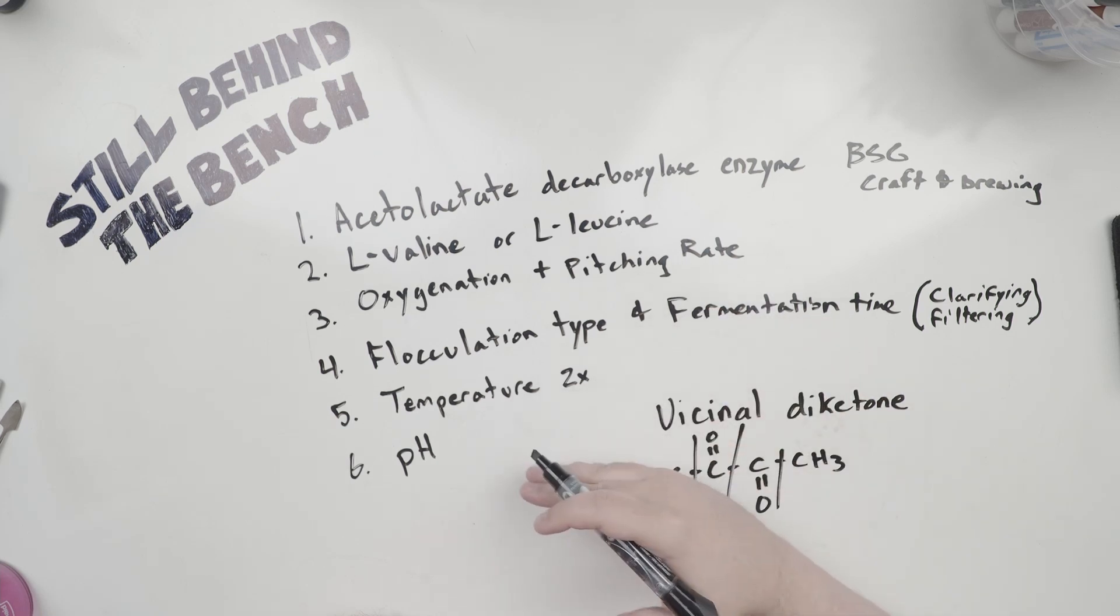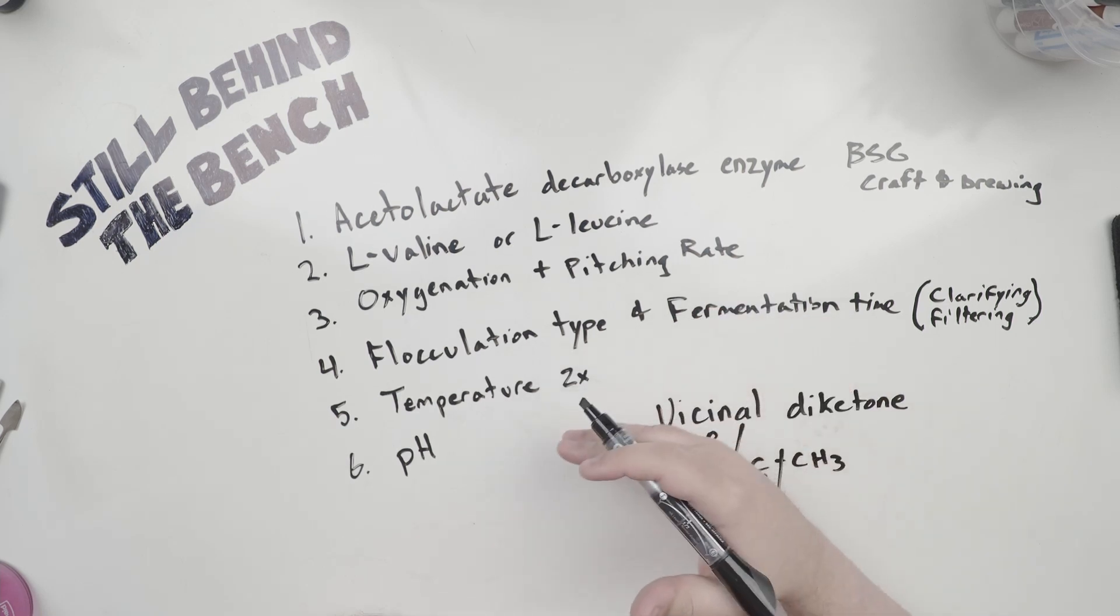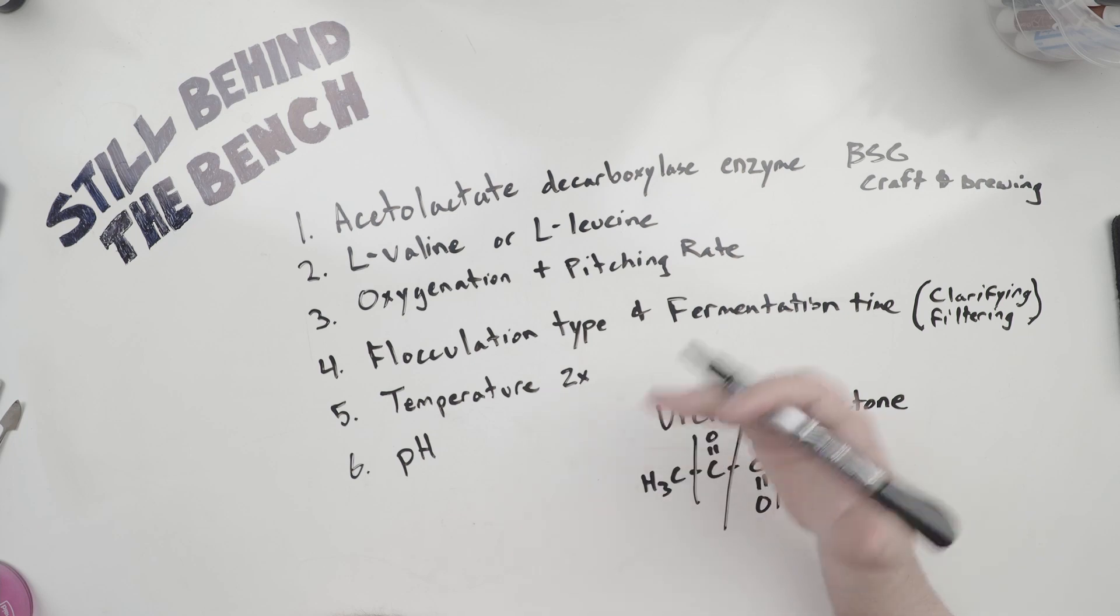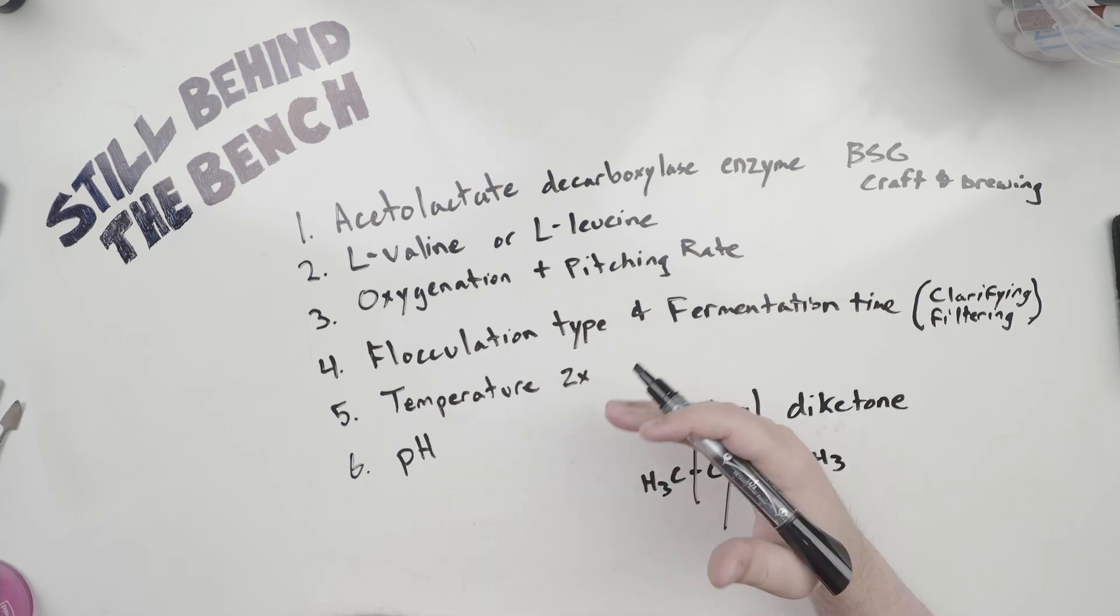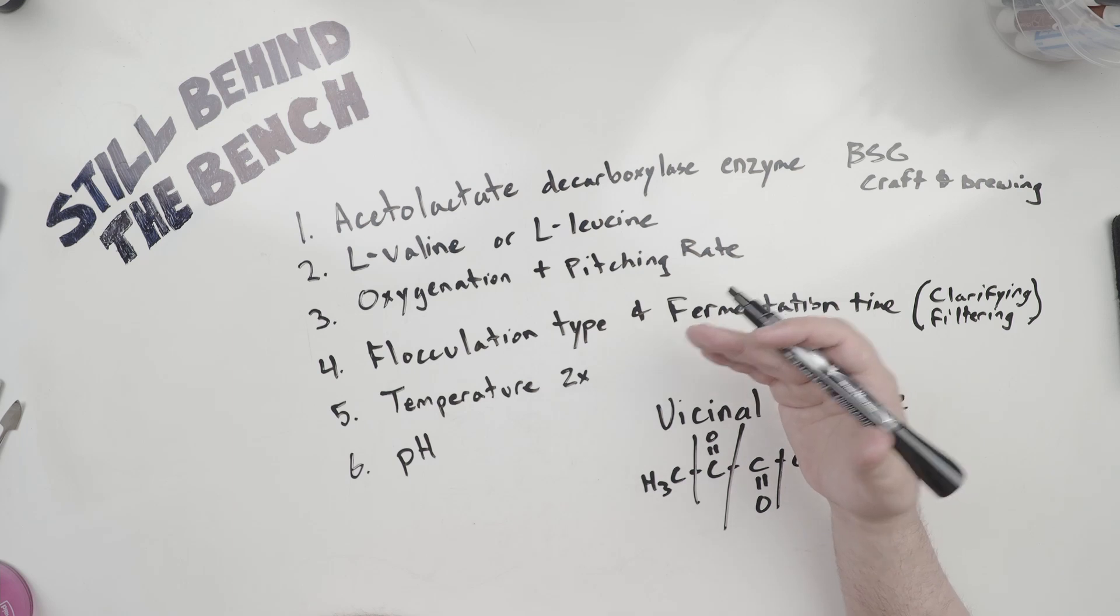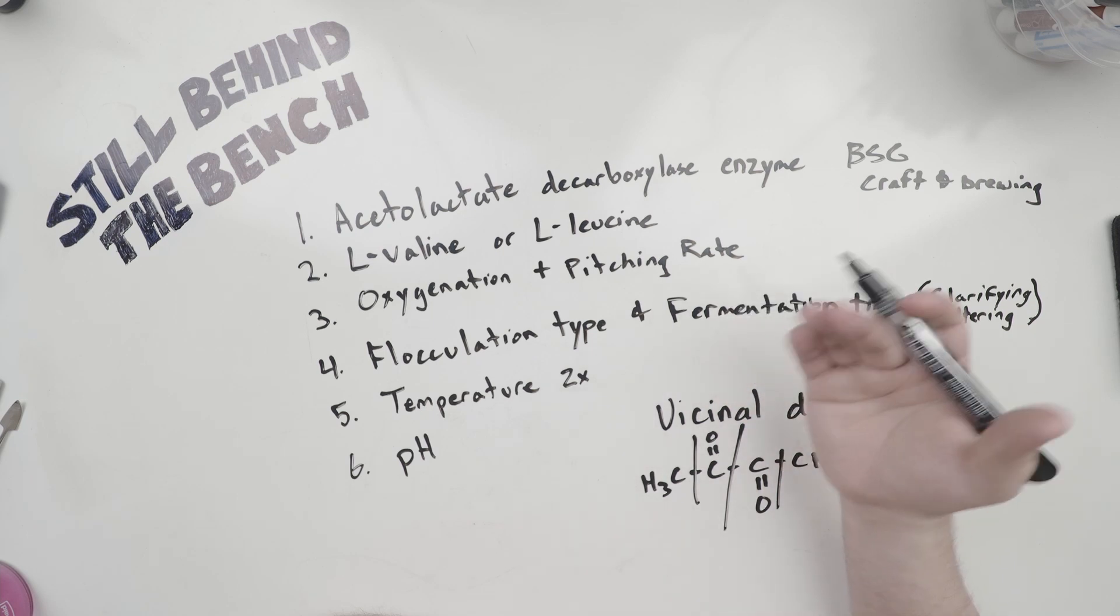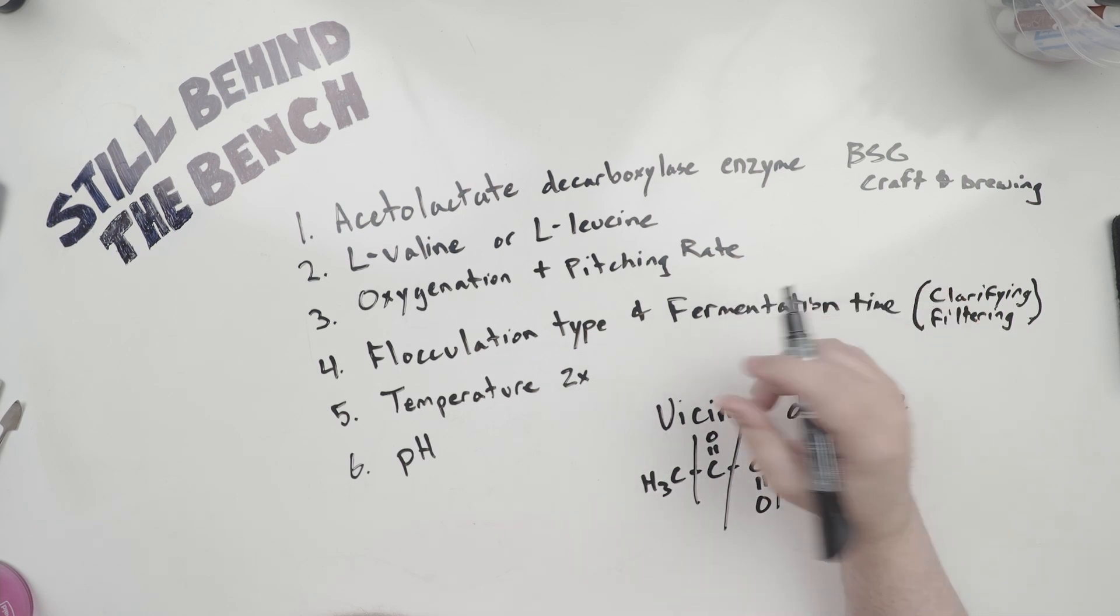If you want to do the opposite and limit it, ferment at a lower temperature, pitch with more yeast, use a yeast that has a low to moderate flocculation type, don't over oxygenate, use a buffer that holds your pH at a higher value. Maybe add valine amino acid and or acetolactate decarboxylase enzyme, and then when you think the fermentation is finished, let the yeast settle naturally over a few days so it can remove any excess diacetyl. And that's essentially how you control the levels of this compound.